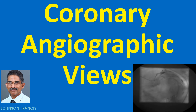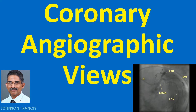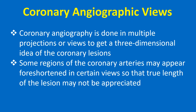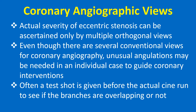Coronary angiography is done in multiple projections or views to get a three-dimensional idea of the coronary lesions. Some regions of the coronary arteries may appear foreshortened in certain views so that the true length of the lesion may not be appreciated. Actual severity of eccentric stenosis can be ascertained only by multiple orthogonal views. Even though there are several conventional views, unusual angulations may be needed in individual cases to guide coronary interventions. Often a test shot is given before the actual cine run to see if branches are overlapping or not.